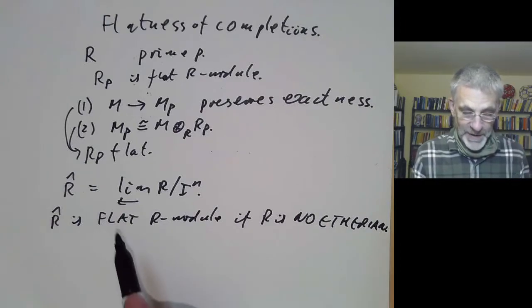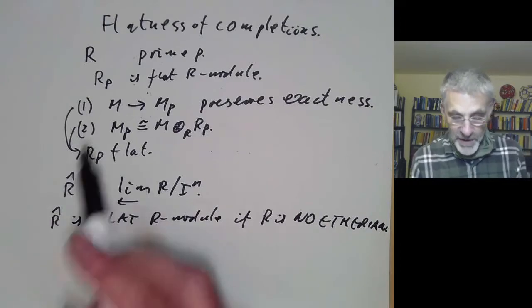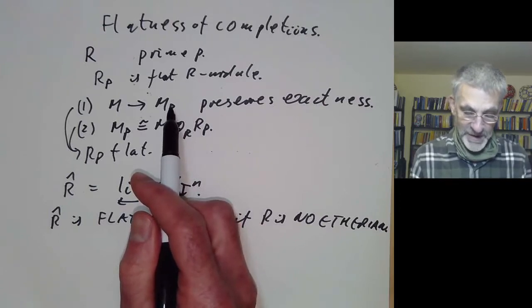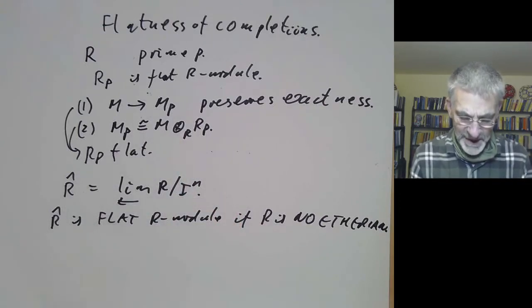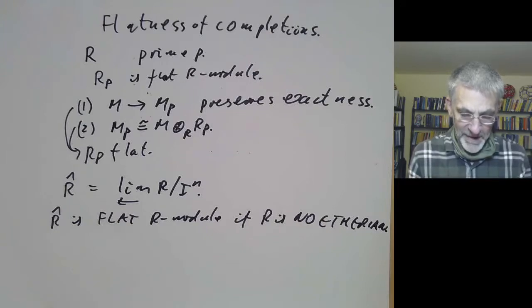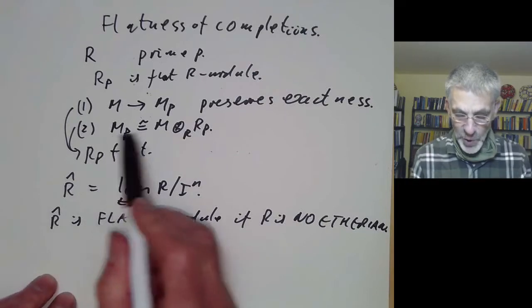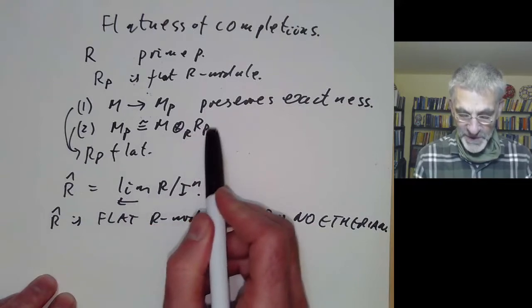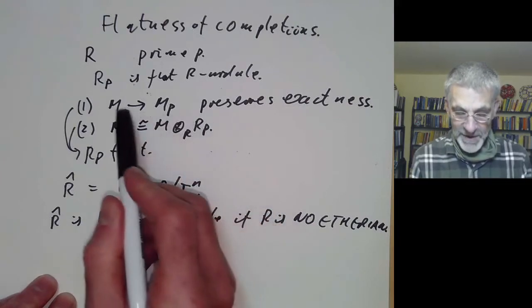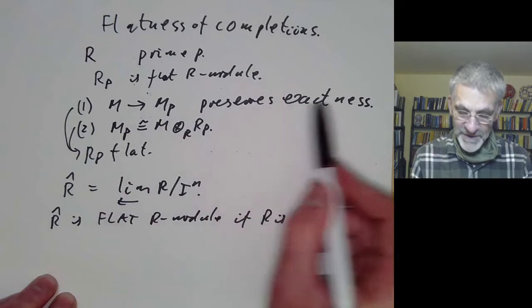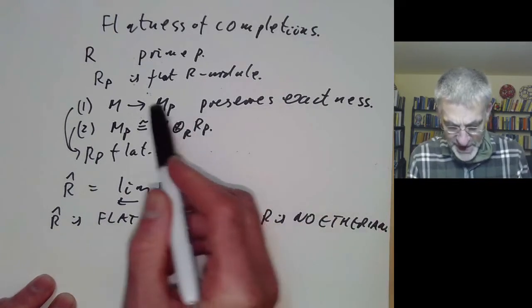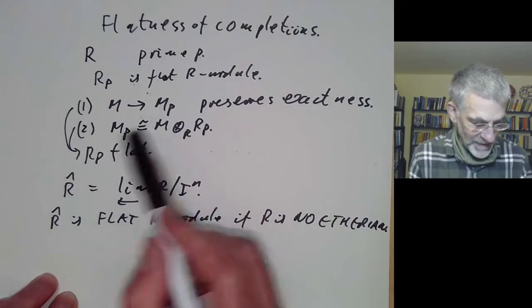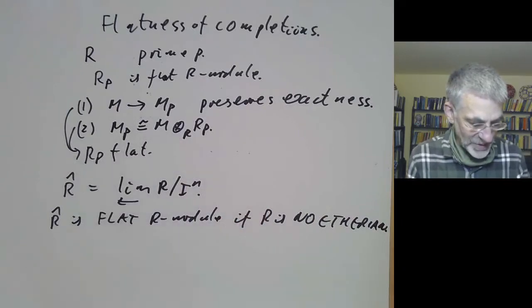We're going to try to copy the proof for localisation. However, there are some slight complications because the completion of a module isn't always obtained by taking the module and tensoring with the completion of the ring, and completing a ring doesn't always preserve exactness. So although we're going to imitate this proof, there will be some extra complications.